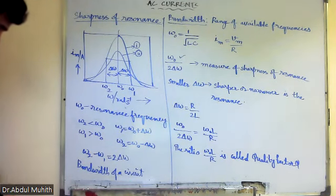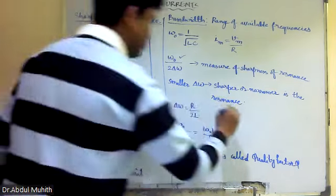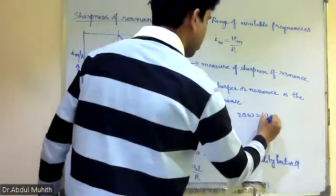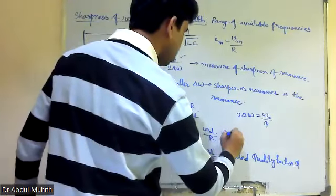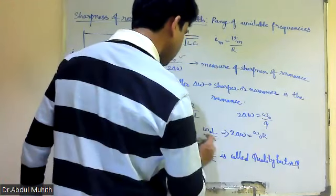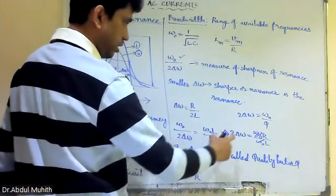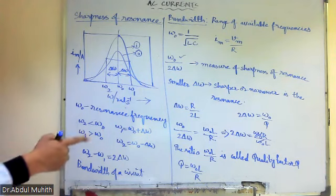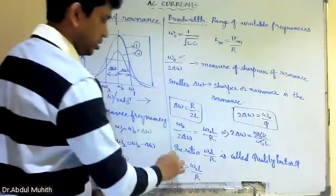So Q equals Omega zero L by R. Two Delta Omega, that is the bandwidth, equals Omega zero by Q. If we solve this, bringing two Delta Omega to the numerator: Omega zero R divided by Omega zero L — the Omega zeros cancel — giving two Delta Omega equals R by L. Therefore, bandwidth equals Omega zero by Q, because Q equals Omega zero L by R. These are all the relations.